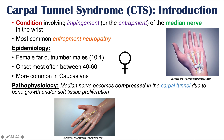The bones in this area of the wrist can increase in size, leading to compression of the median nerve, or soft tissue in that area can grow or swell, which can also push on and impinge the median nerve.